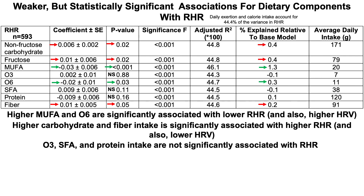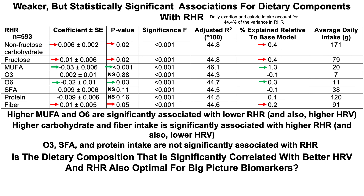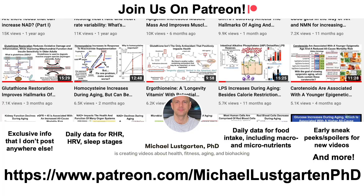This diet — relatively higher MUFA and omega-6, but lower carbohydrate and fiber intake — could potentially increase heart rate variability and lower resting heart rate to a lesser degree. But will optimizing diet for cardiovascular metrics be good for overall systemic health in terms of broader biomarkers presented in other videos? In other words, do I optimize CV metrics but worsen my overall health net effect? I haven't investigated that yet, but once I do I'll present that data in another video. If you're interested in more about my attempts to biohack aging, including daily data for resting heart rate, HRV, and dietary data, come check us out on Patreon. Thanks for watching.